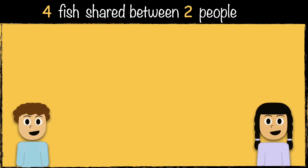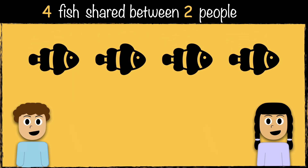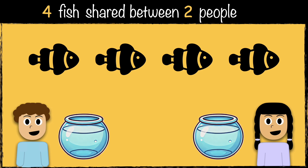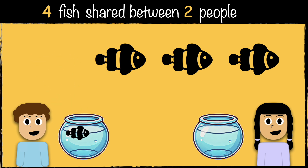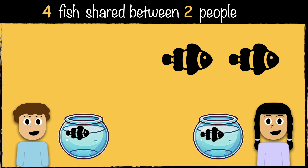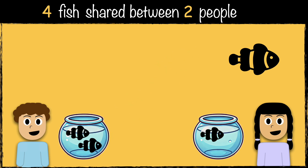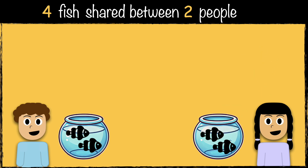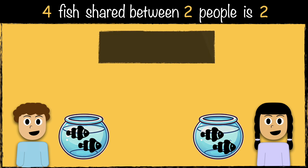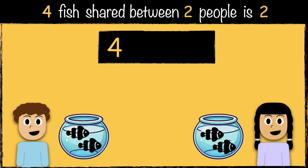Here's another example. We have four fish and we need to share them equally between two people. One fish for you and one fish for you — we still have some more fish, so we continue sharing: one for you and one for you. Each child got two fish. So when we share four fish between two people, each person gets two. This is how we write it: four divided by two equals two.